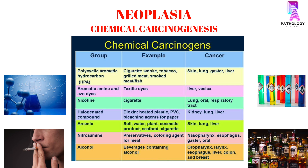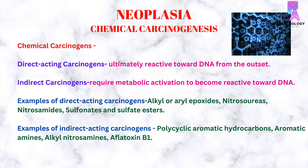Exposure to nitrosamines can cause nasopharyngeal, esophageal, gastric, and oral cancers, and consumption of alcohol can cause oropharyngeal, laryngeal, esophageal, liver, colon, and breast cancer. These chemical carcinogens are of two types: direct acting and indirect acting carcinogens.